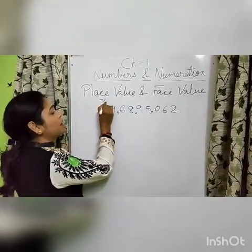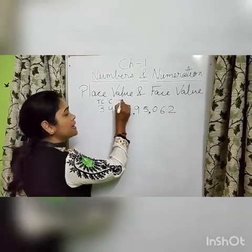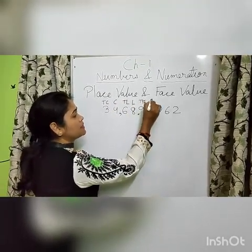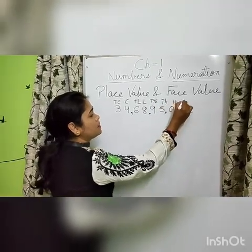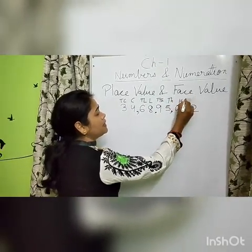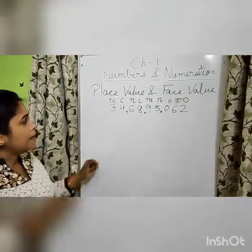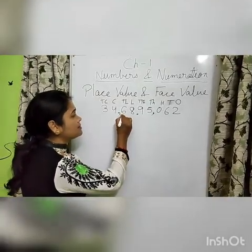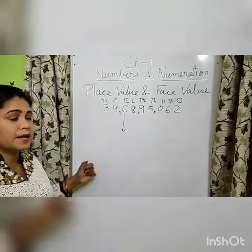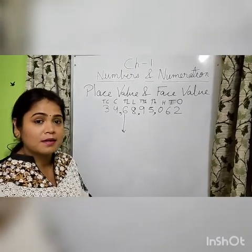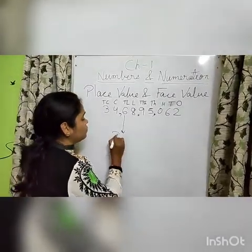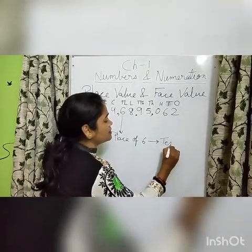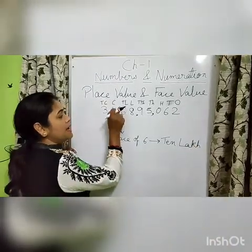Each period has places, and all place names you know: ten crore, crore, ten lakh, lakh, ten thousand, thousand, hundred, tens, and ones. Clear? So if somebody is asking in which place six is there — what is the place of six — we will say the place of six is ten lakh.